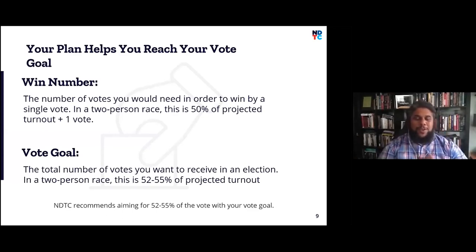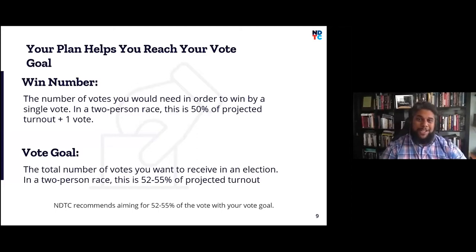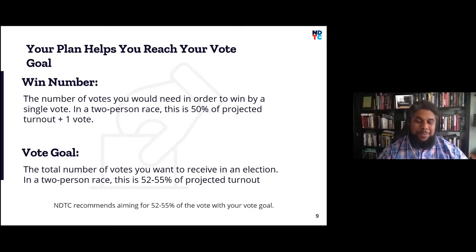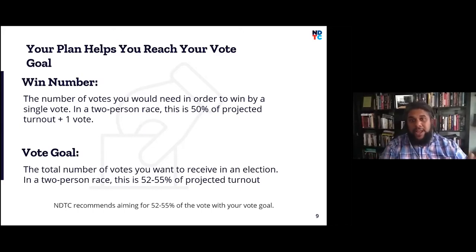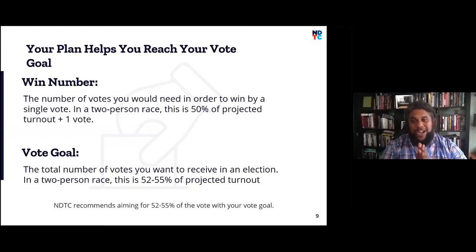The first question you need to answer in a campaign plan is your win number — it is the most important thing to figure out. NDTC defines a win number as the number of votes you need to win by a single vote in a two-person race: 50% of projected turnout plus one vote. I prefer to use 51%, because winning by technically one vote can lead to legal challenges, as happened in Massachusetts on a race I was working on. There is a whole separate training on building a win number.